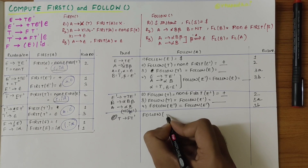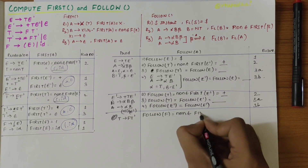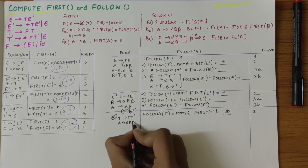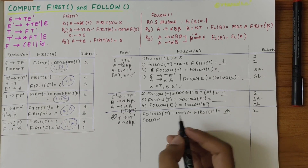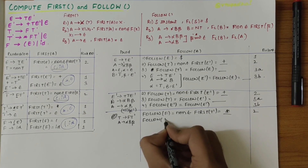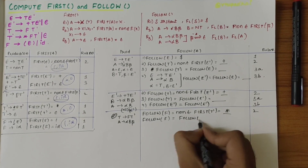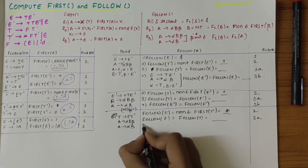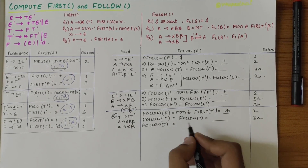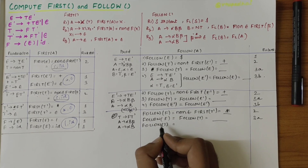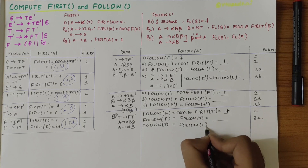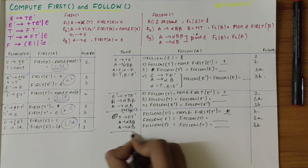For T derives FT': by rule two, follow of F is equal to non-epsilon first of T', which is '*'. By rule 3a, follow of F also includes follow of T, which is unknown. Comparing with A derives alpha B, B is T', so follow of T' is equal to follow of T, which is unknown — rule 3b.